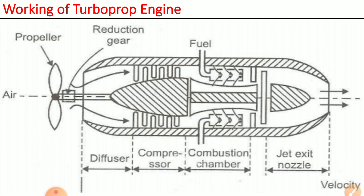The power produced by the turbine is used for rotating the compressor shaft and other devices. Whatever power is produced by the turbine is used for driving the compressor and other devices. After that, the gases pass through the nozzle, which is the tail portion of the engine.